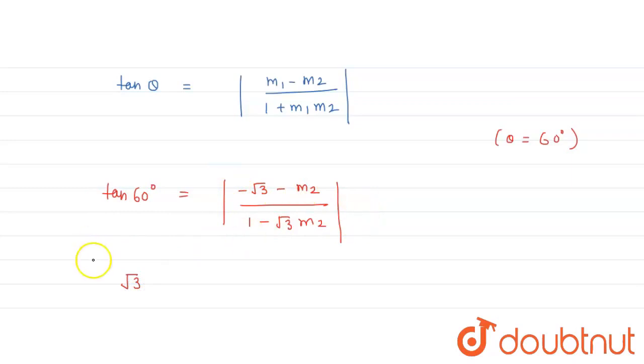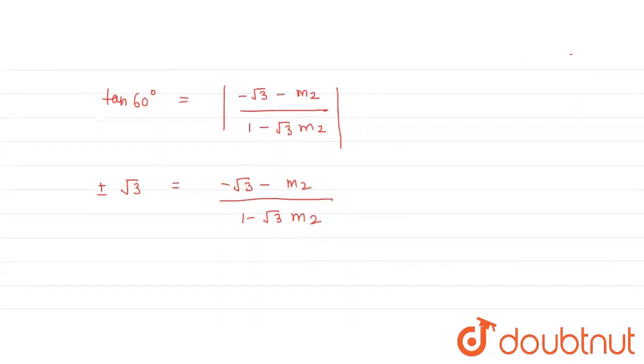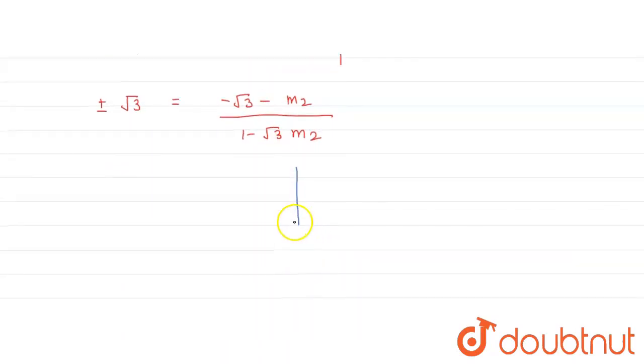So if we remove the modulus, we need to add plus and minus signs. This equals minus root 3 minus m2 upon 1 minus root 3 m2. Now take the two cases. In the first case, we take the plus sign, and in the second case we take the negative sign.